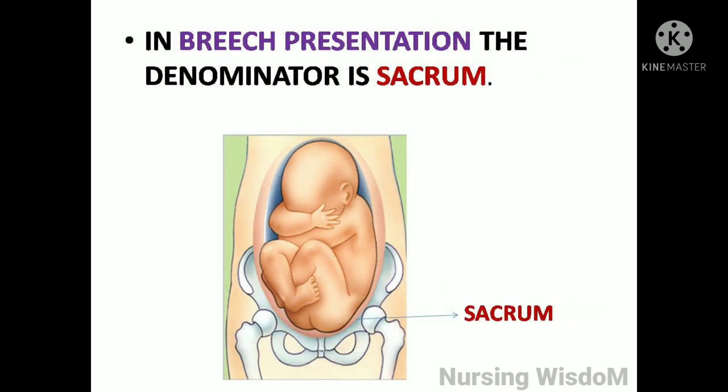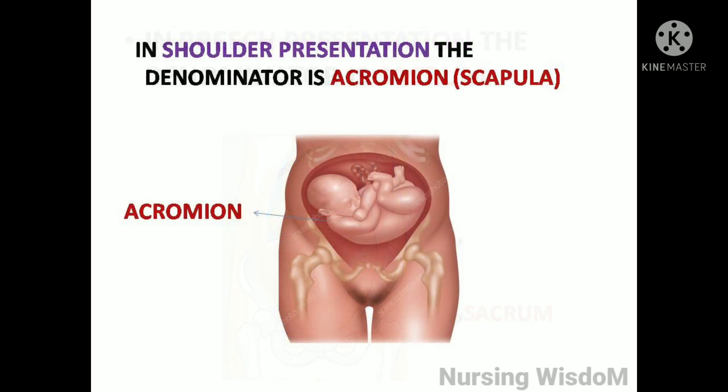In breech presentation the denominator is sacrum. In shoulder presentation the denominator is acromion or scapula.